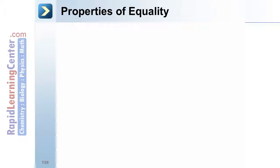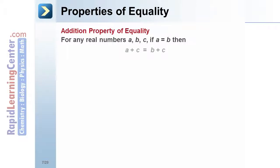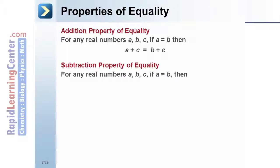Properties of Equality. Addition Property of Equality: For any real numbers a, b, and c, if a = b, then a + c = b + c. Subtraction Property of Equality: For any real numbers a, b, and c, if a = b, then a - c = b - c.